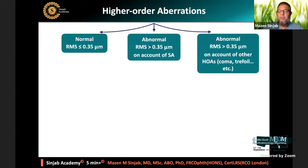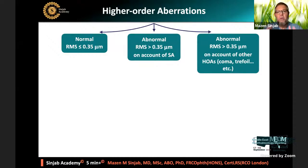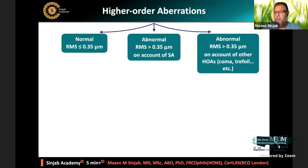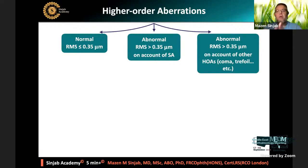Starting with pathway one: if the cornea has normal high-order aberrations, then if the patient cares about depth of focus, we can implant a premium IOL. If image quality is critical, we implant negative or zero spherical aberration IOL. For example, if pre-op corneal spherical aberration was plus 0.35, we implant minus 0.27 microns IOL to achieve post-op ocular spherical aberration close to plus 0.1 microns. If pre-op was plus 0.17, we implant zero spherical aberration to maintain it. For the third pathway — abnormal RMS on account of other high-order aberrations — we must not manipulate the spherical aberration, as this would induce more high-order aberrations; the best option is to implant zero spherical aberration.